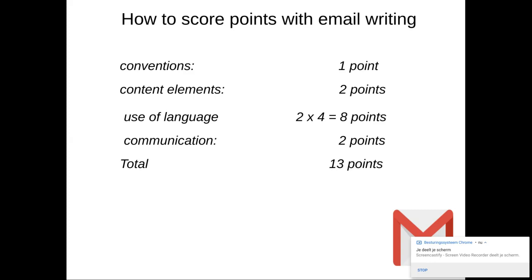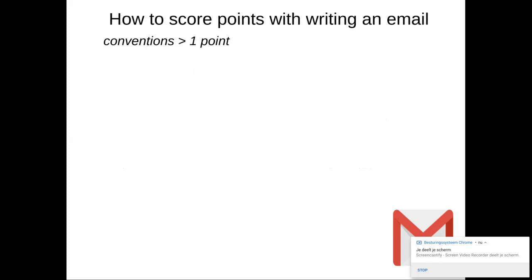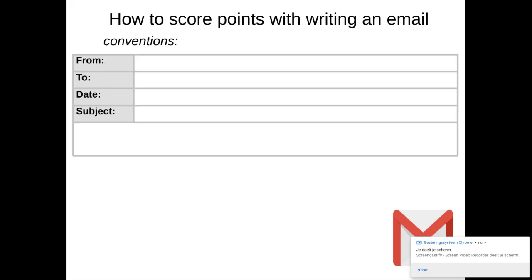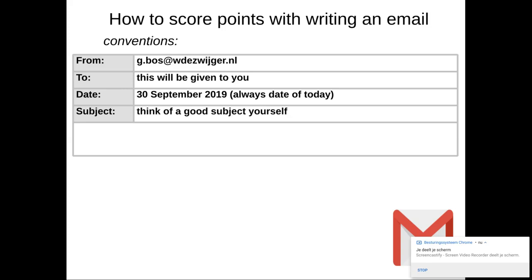I will explain to you how you can get the points. So the first one is for conventions. I think you'll remember, this is the square where you have to fill in. From, it's you, it's from you. So it's your name at wedesweiger.nl. To, we will give you the email address where you have to write to. The date is always the date of today and the subject. You have to think of a good subject yourself.